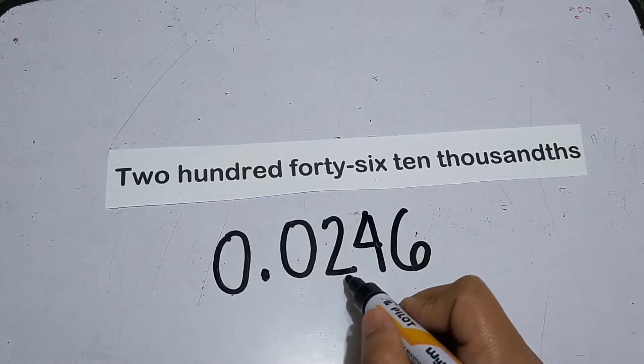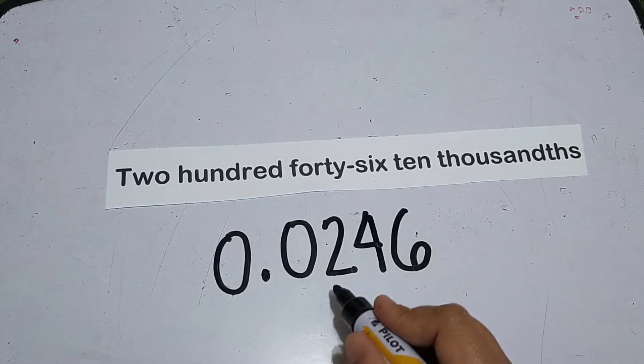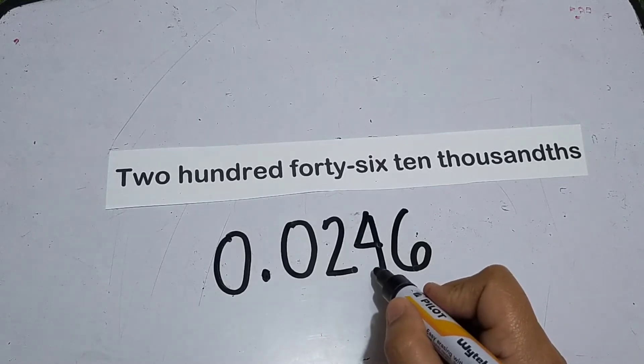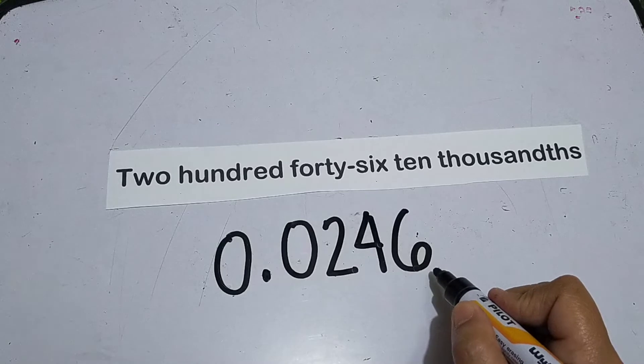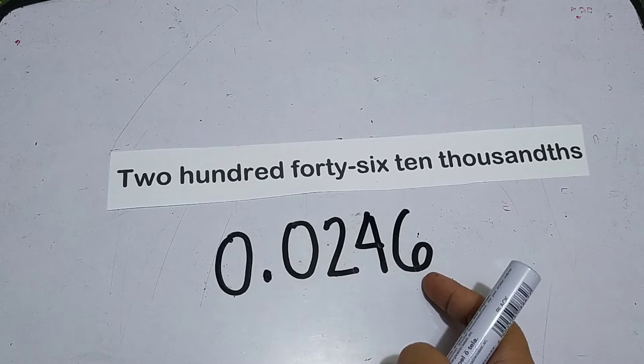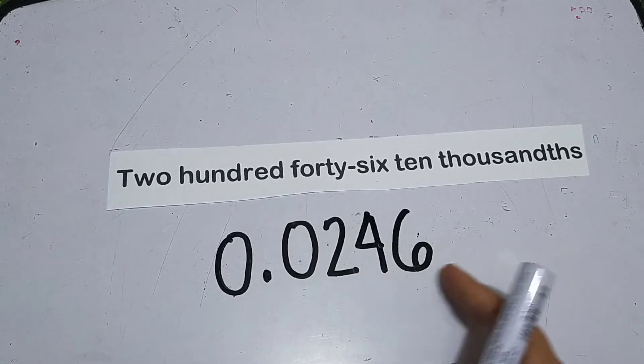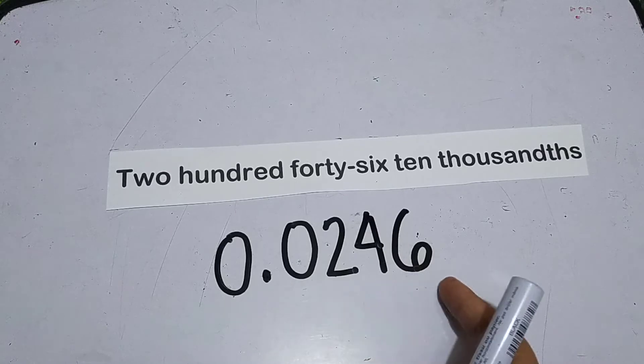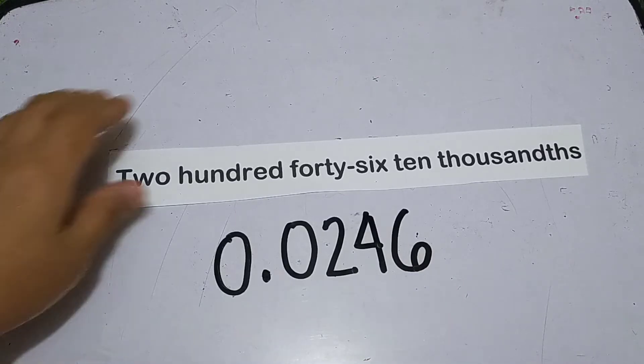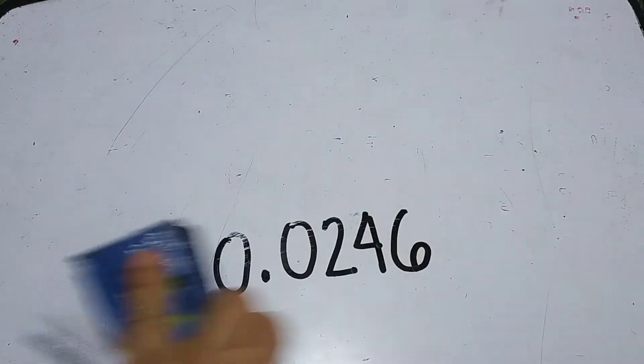Do you remember the place value? Zero here is tens, hundreds, thousands, ten thousands. When you read this, it's two hundred forty-six ten thousandths because the place value of our last digit is ten thousandths. If you remove the zero, it won't be two hundred forty-six ten thousandths anymore, it'll just be two hundred forty-six thousandths.